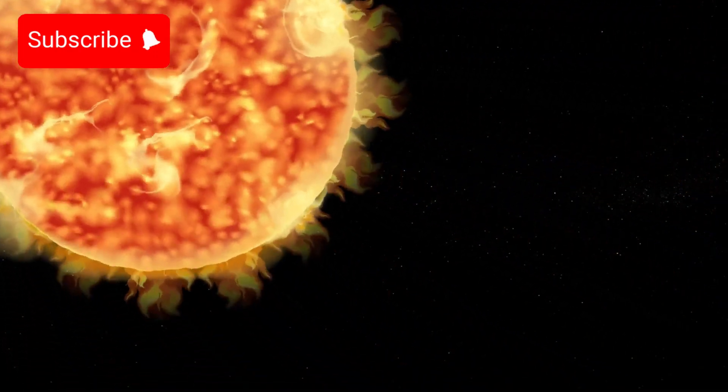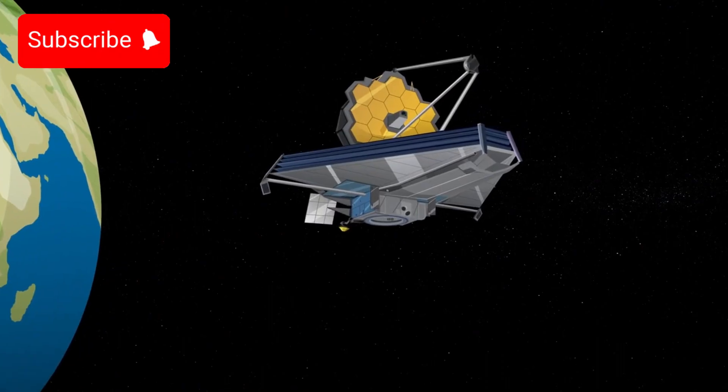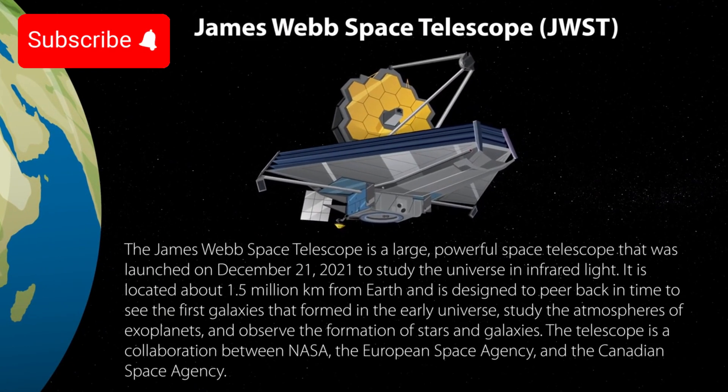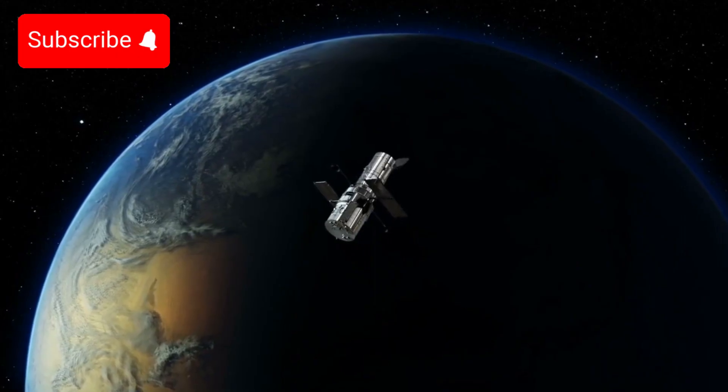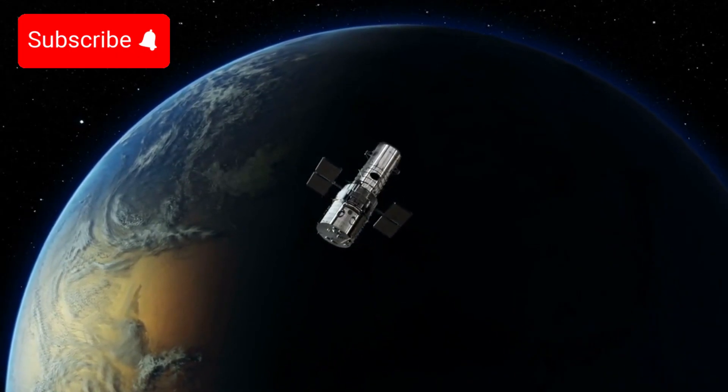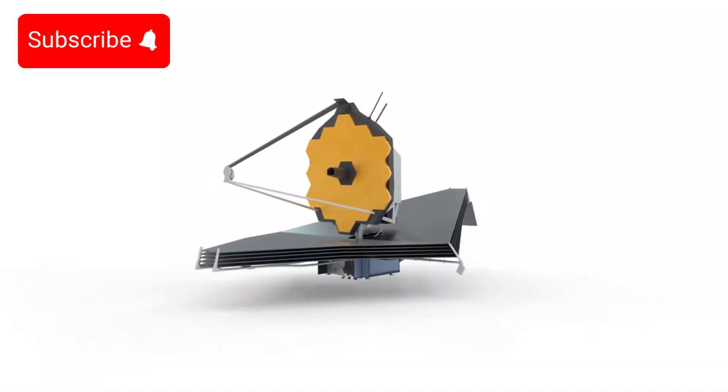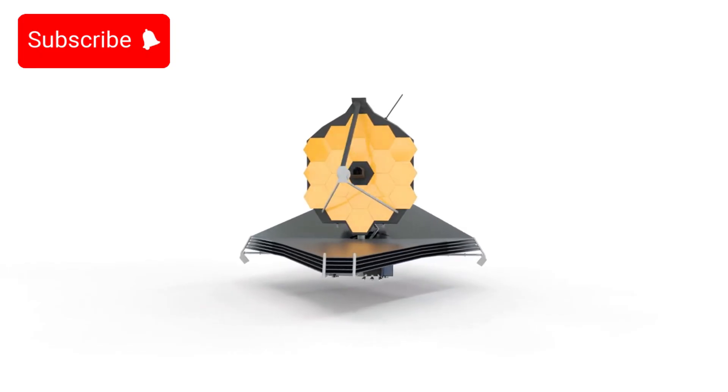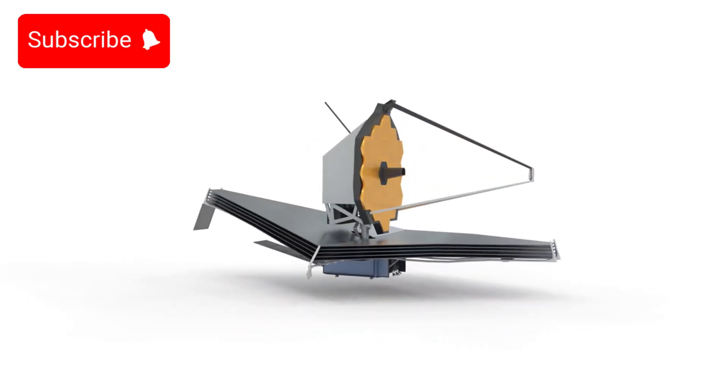The JWST stands as evidence of cutting-edge engineering and astronomical technology. It features a primary mirror that is 6.5 meters (21.3 feet) in diameter, making it significantly larger than the Hubble Space Telescope's mirror. This large mirror allows the JWST to collect light from extremely faint and distant objects in the universe.